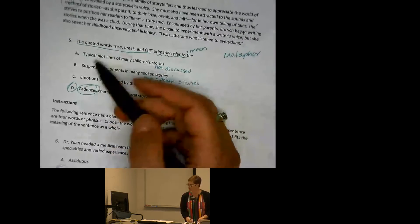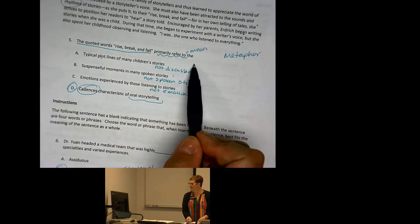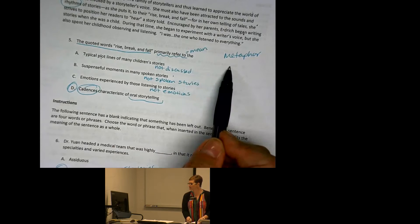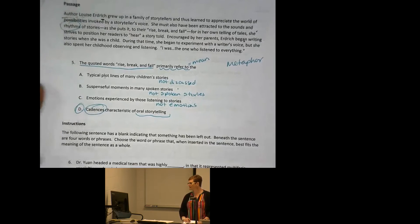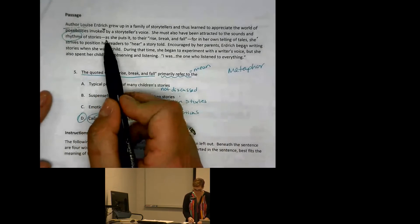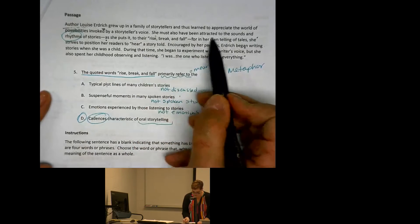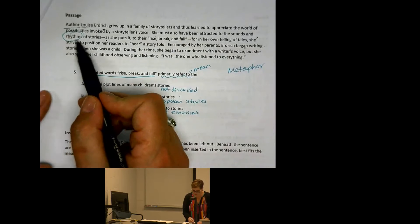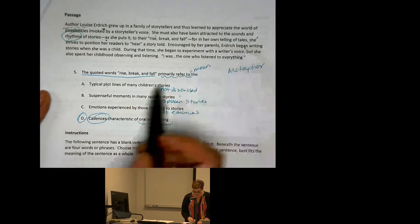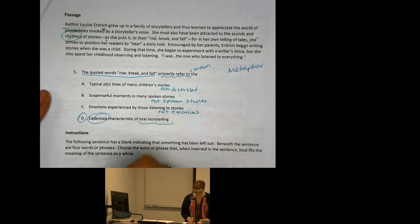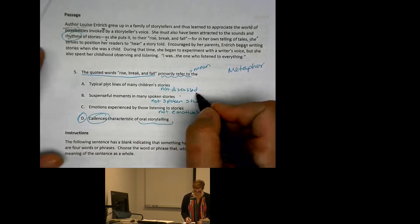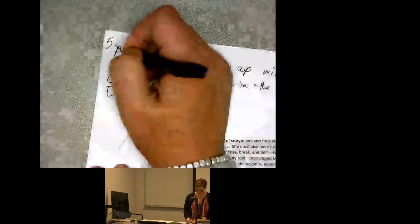Going back to the question: the quoted words 'rise, break, and fall' — what do they mean? We know it's figurative language. Option A: does 'rise, break, and fall' mean 'the typical plot lines of many children's stories'? If we go back to the sentence, it doesn't say anything about children's stories — it just says the rhythms of stories, or their rise, break, and fall. And it doesn't say anything about plot lines. So this is simply not discussed — it might be true but it's not discussed. For A, I would say no. Option B: 'suspenseful moments in many spoken stories' — we've already established she's an author writing for readers and working on her writer's voice. These are not spoken stories. She grew up listening to spoken stories, but that's not what she does — her job is to write.